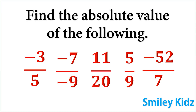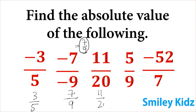Now let's solve these. Find the absolute value of the following: minus three by five — the absolute value is three by five. Minus seven by minus nine equals seven by nine, so its absolute value is seven by nine. The absolute value of eleven by twenty is eleven by twenty. The absolute value of five by nine is five by nine. The absolute value of minus fifty two by seven is fifty two by seven.